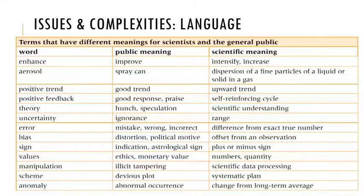One of the big issues and complexities is language. This slide shows various words and what they mean in the general public versus their scientific meaning. For example, 'positive feedback' means something very different scientifically. What an 'anomaly' is — instead of just a crazy abnormal occurrence, it means a change from a long-term average. I ran some of these by my wife the potato doctor and they check out. The precision of language is very important in natural sciences, though it occurs to some extent in human sciences as well.